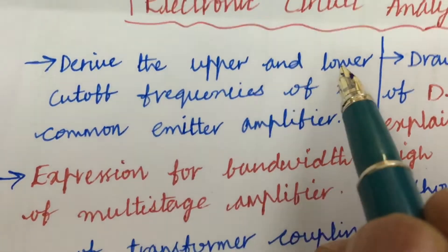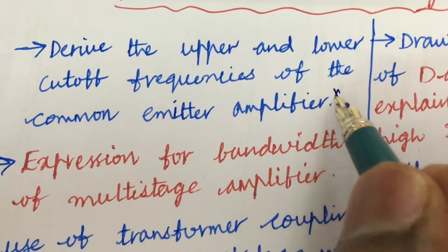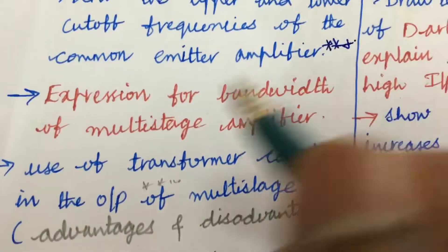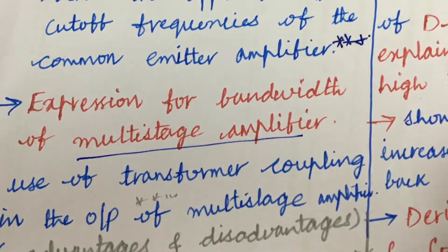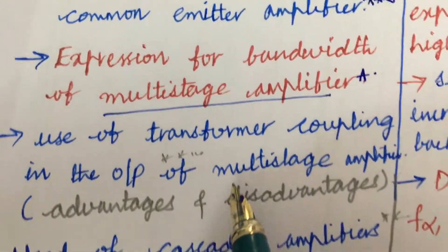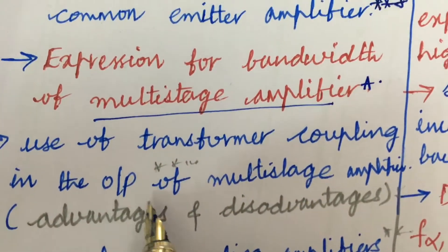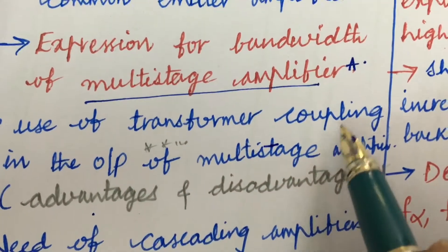Derive the upper and lower cutoff frequencies of the common amplifier - one of the very important and gunshot questions. Expression for bandwidth of a multistage amplifier related to multistage amplifier. You are going to get a problem as well as the expression to be worked out. The use of transformer coupling in the output of a multistage amplifier - advantages and disadvantages.